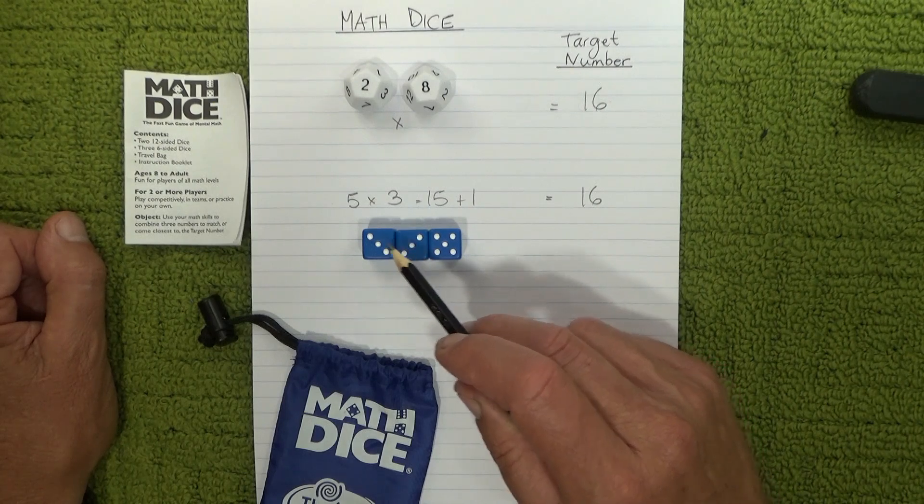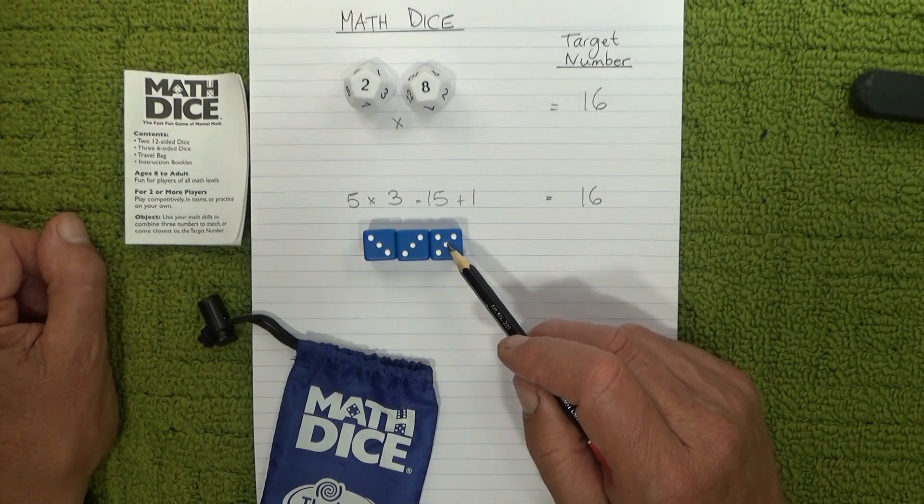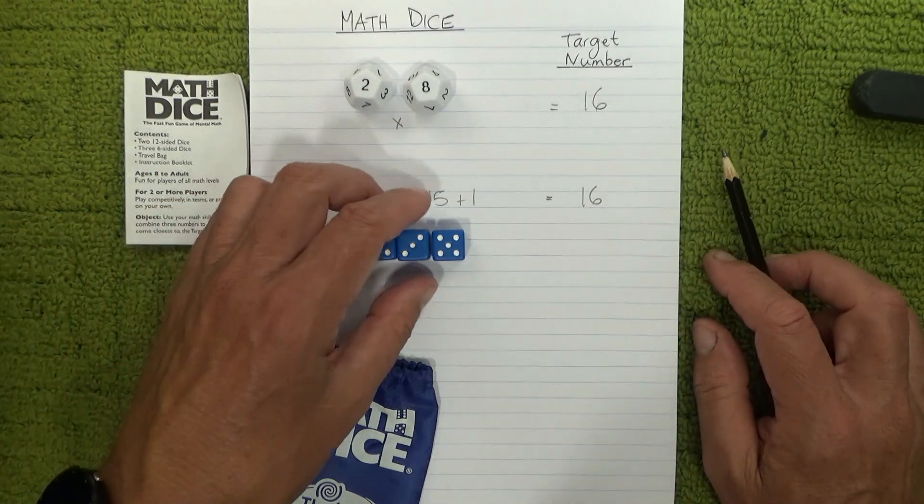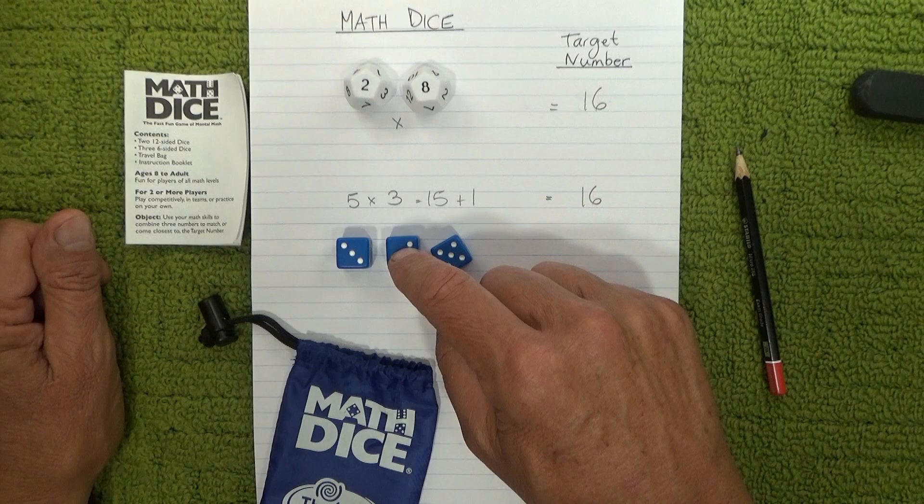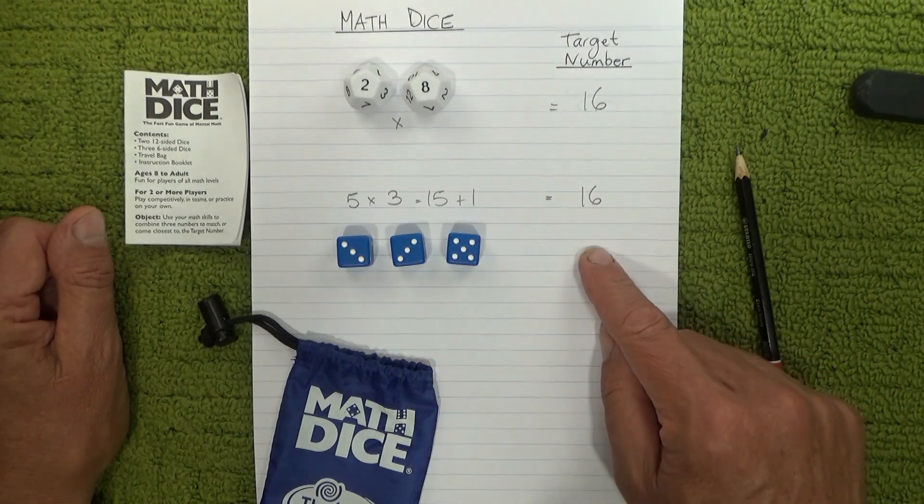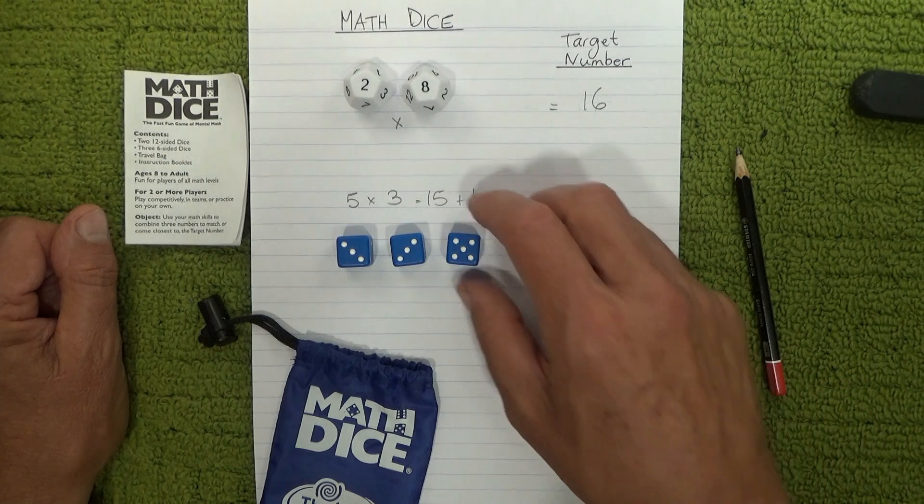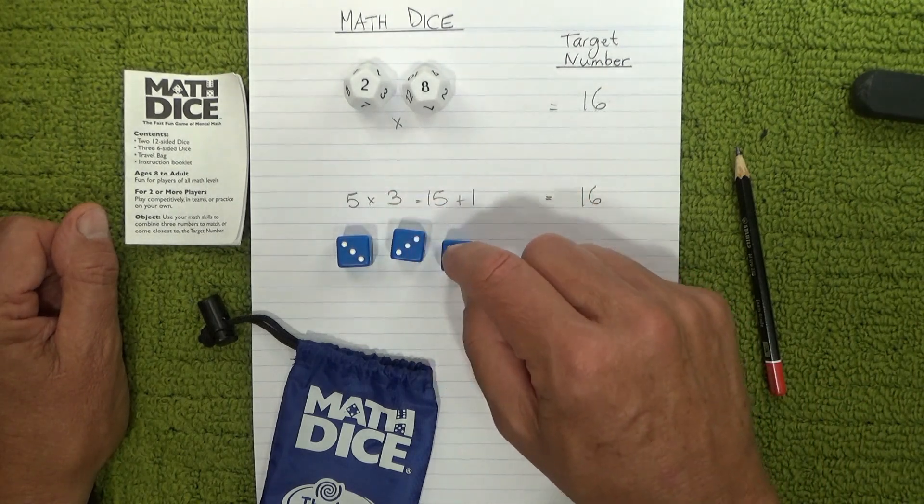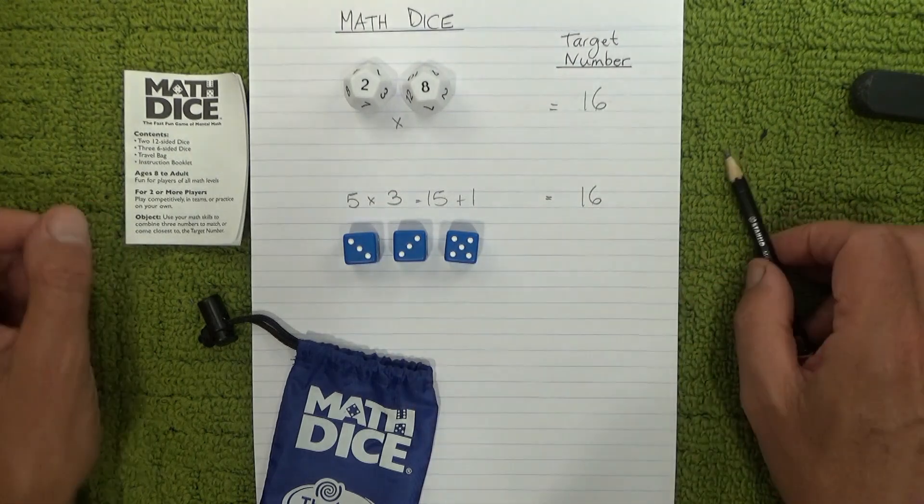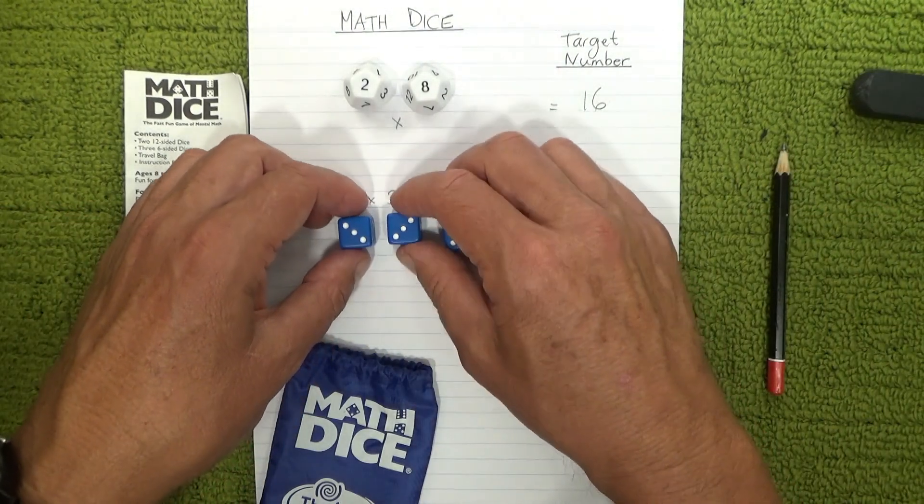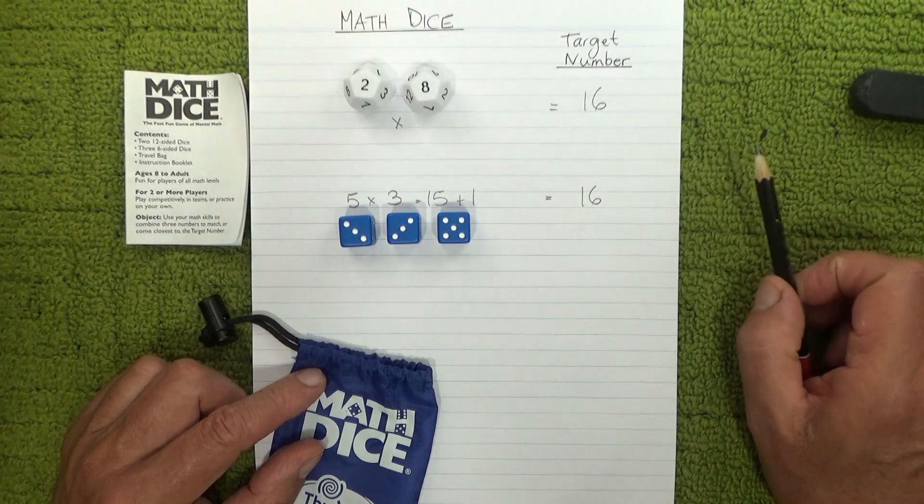So let's have a look, we've got three plus three plus three is six plus five is eleven. But you could do five, three times three is nine plus five is fifteen which is pretty close. Or five times three is fifteen plus three is eighteen.